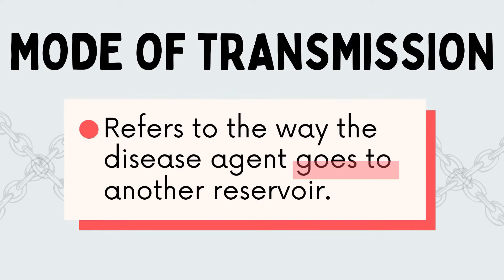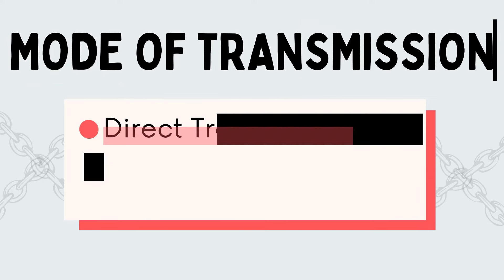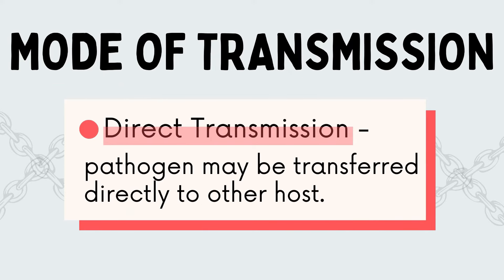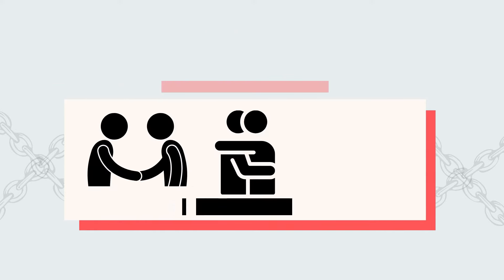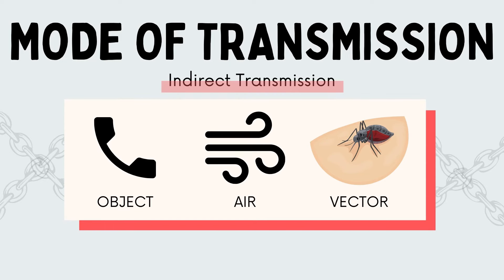Next is mode of transmission — it refers to the way the disease agent goes to another reservoir. Communicable diseases can spread through direct transmission and indirect transmission. Direct transmission happens when a pathogen is transferred directly to another host, such as through a handshake, hugging, or kissing. Indirect transmission occurs when there is no direct human-to-human transfer; it happens through an intermediate object, air, or vector.